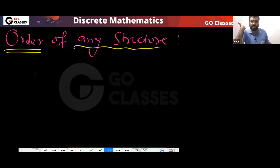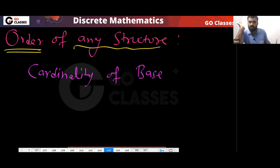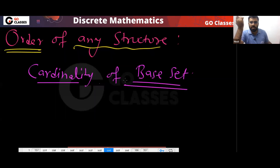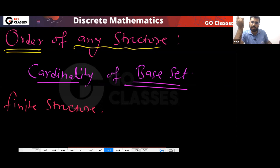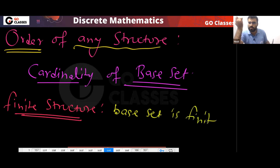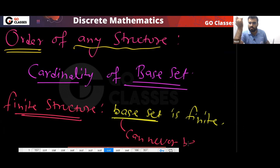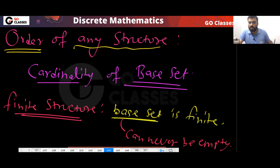The order simply means the cardinality of the base set. A finite structure means the base set is finite, and the base set can never be empty. So order basically means the cardinality of the base set.